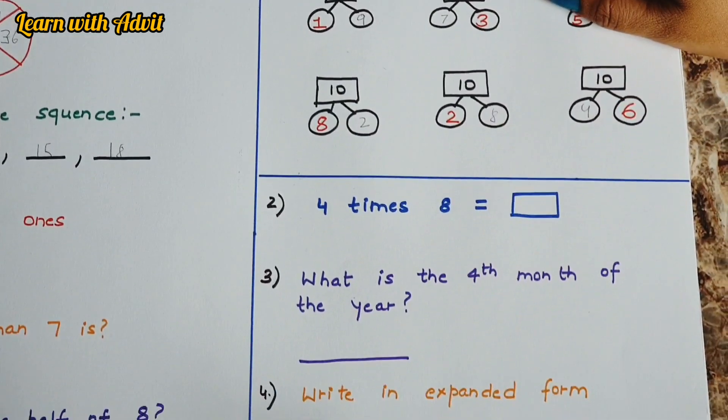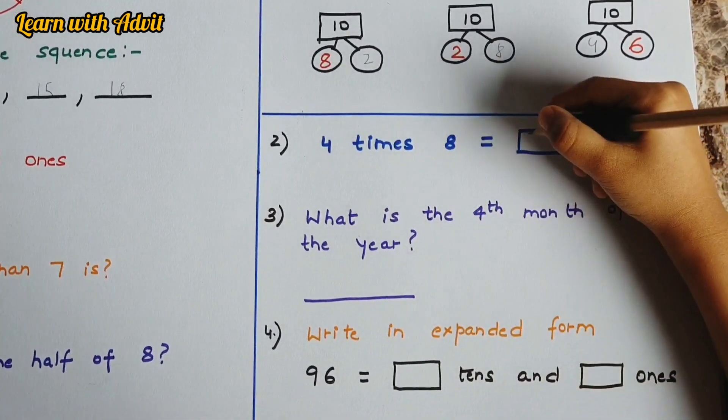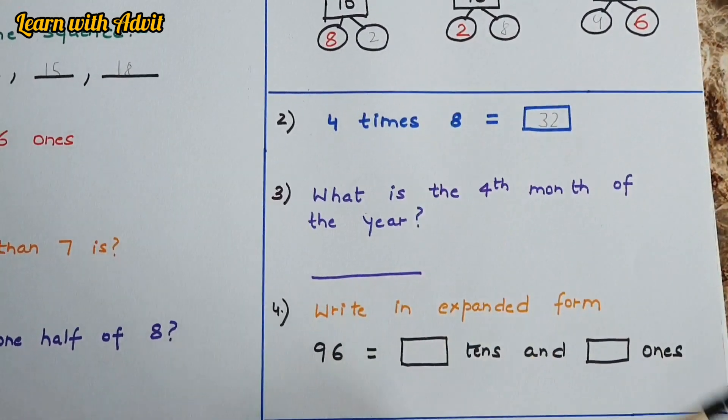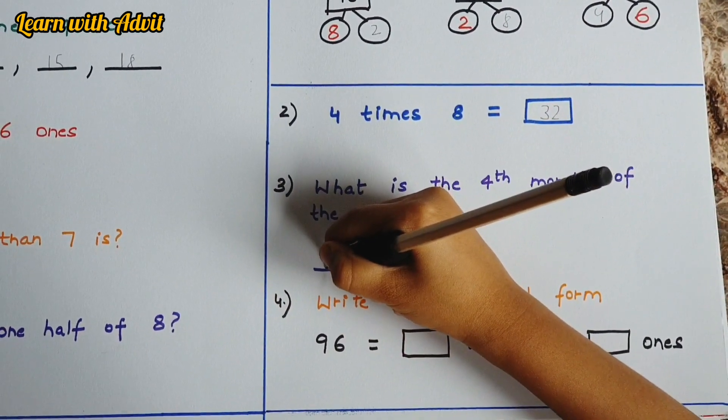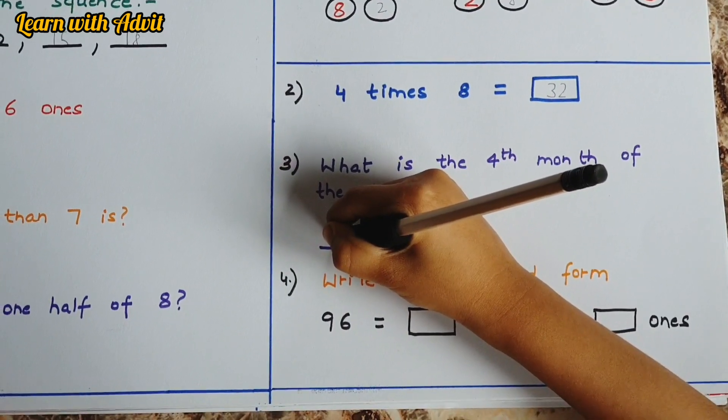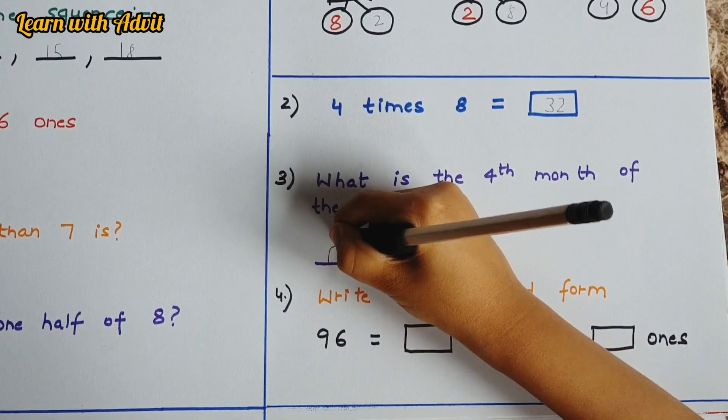4 times 8 equals 32, or 8 times 4 equals 32. Very good. What is the 4th month of the year? So first month is January, February, March. 3rd one is March, and 4th one is April. Very good. Write it down. A-P-R-I-L.